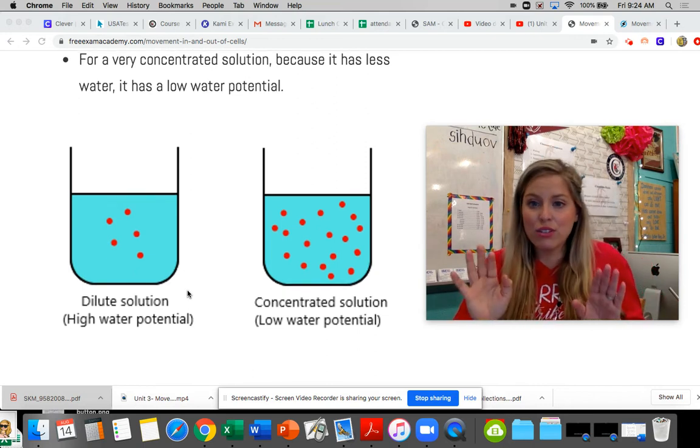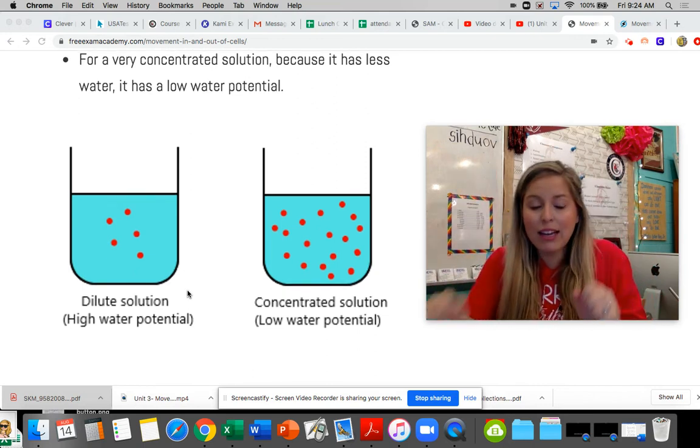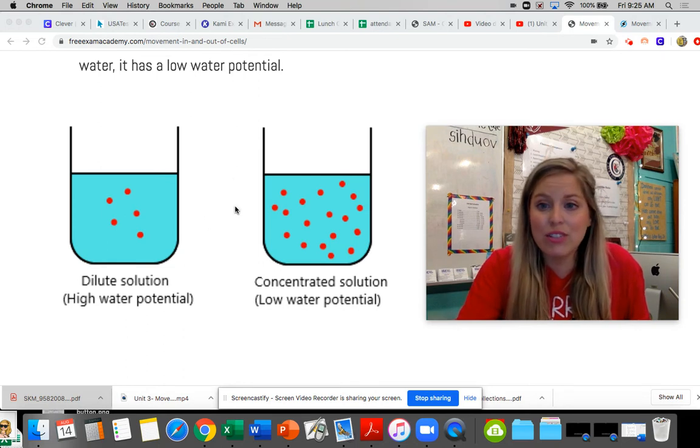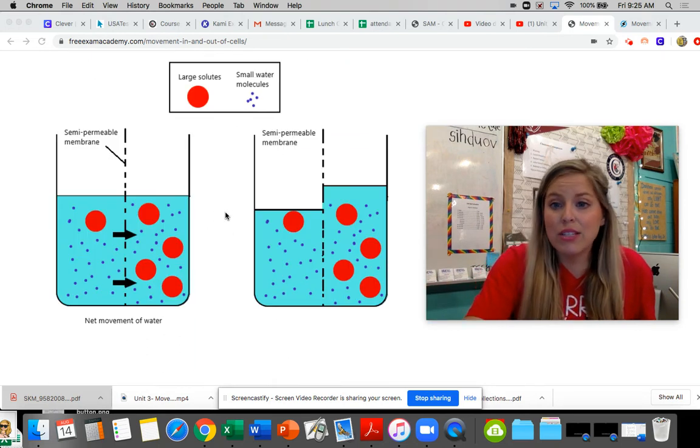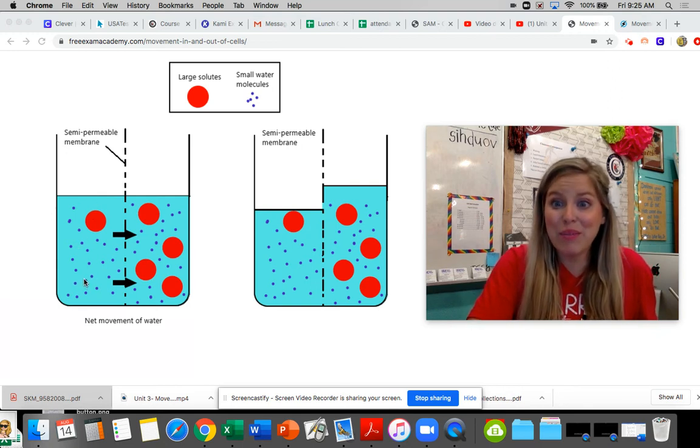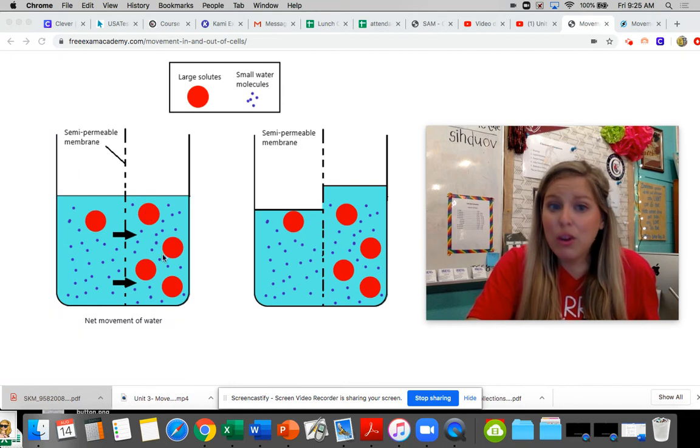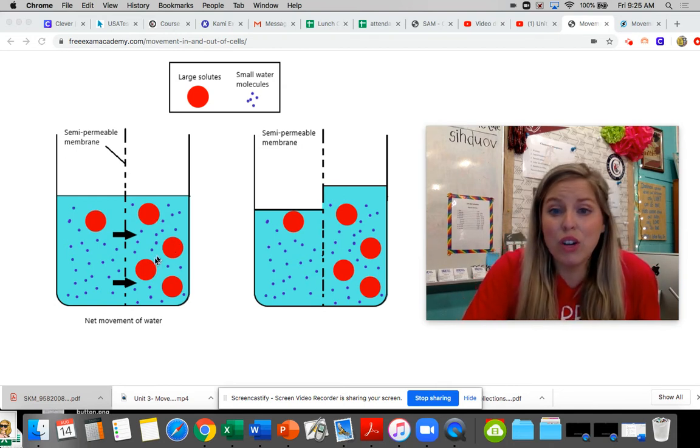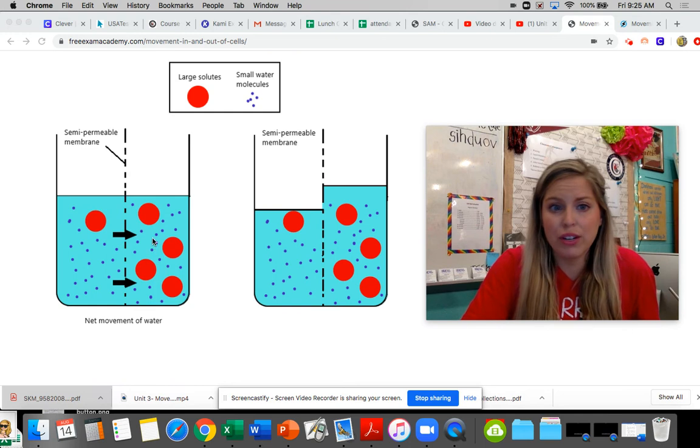So let's say we had these two scenarios outside of a cell membrane. So if we have our semi-permeable cell membrane, and let's say on the outside of one side of the cell membrane, there was a high water potential. This is a dilute environment, but on the other side of the cell membrane, it was a very low water potential or a very concentrated environment with these large solids. Let's just call them sugar.